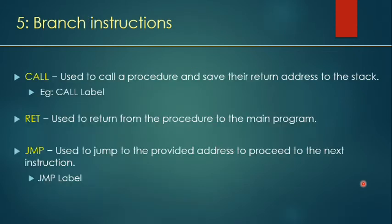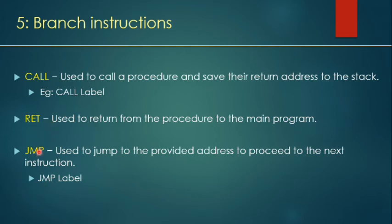In branch instructions, you break the sequence of your main program and jump to a different memory location, execute a new program (subroutine), and then return to the main program. The CALL instruction jumps to a different location, and the RET instruction returns from the subroutine back to the main program. JUMP is another method to jump to a label. CALL and JMP are unconditional, but JMP also has conditional jump variants which we will cover in the future.